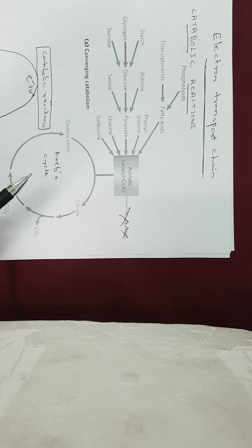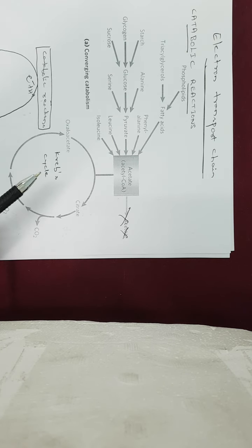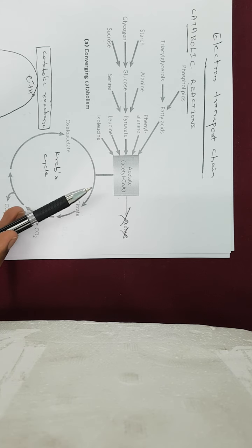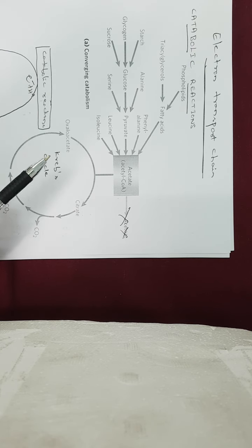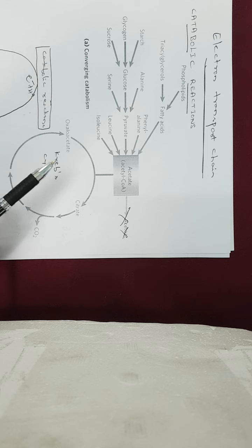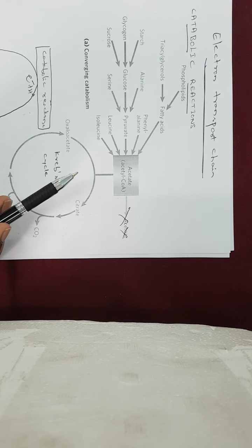Dear students, in this class we are going to discuss about the electron transport system. The electron transport system is the final point in all the catabolic reactions which take place inside the cells. Catabolic reactions of all the different biomolecules are going to be involved in providing the energy to the cells.